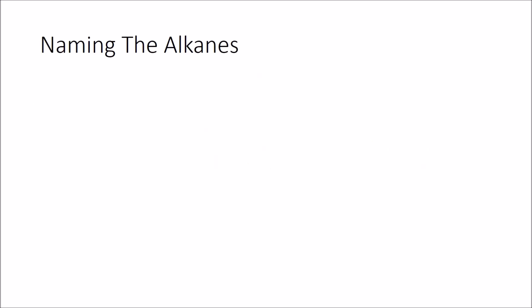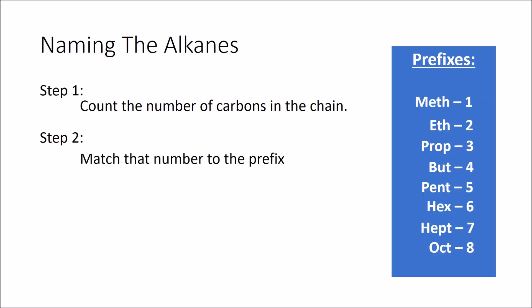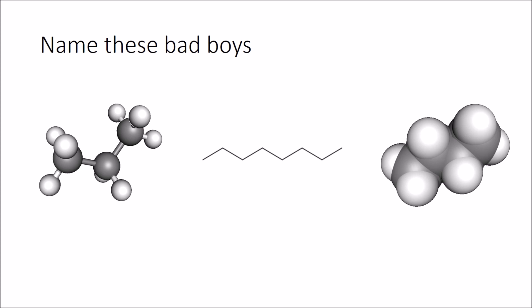Now in order to name the alkanes, let's quickly revise the rules. The first rule for naming an alkane is count the number of carbons in the chain. Once you know the number of carbons, you then know your prefix. So you will match that number to the prefix. Here are the prefixes here, meth 1, eth 2, prop 3, but 4, pent 5, hex 6, hept 7, oct 8. Then all you have to do is add ane. So methane, ethane, propane, butane, pentane, hexane, heptane, octane.